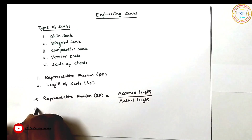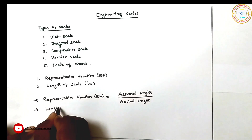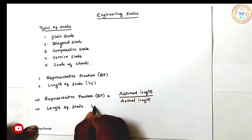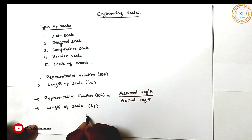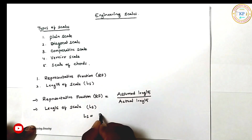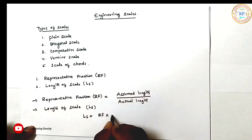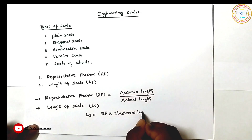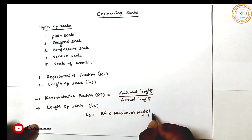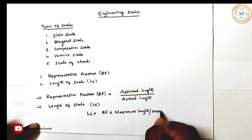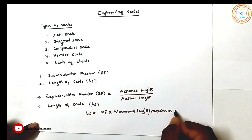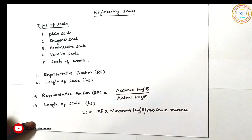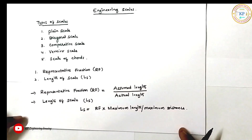Next is Length of Scale, Ls. Ls is written as RF into maximum length, or we can call it RF into maximum distance. This maximum distance will be given in the problem.